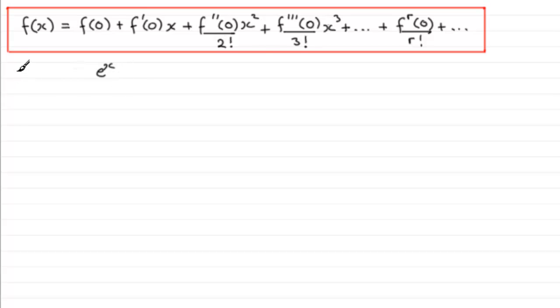So we start by saying let f of x equal our function here which in this example is e to the x. And for the first term here we need to work out what f of zero is. So it follows that f of zero is going to equal e to the power of zero. In other words, one.